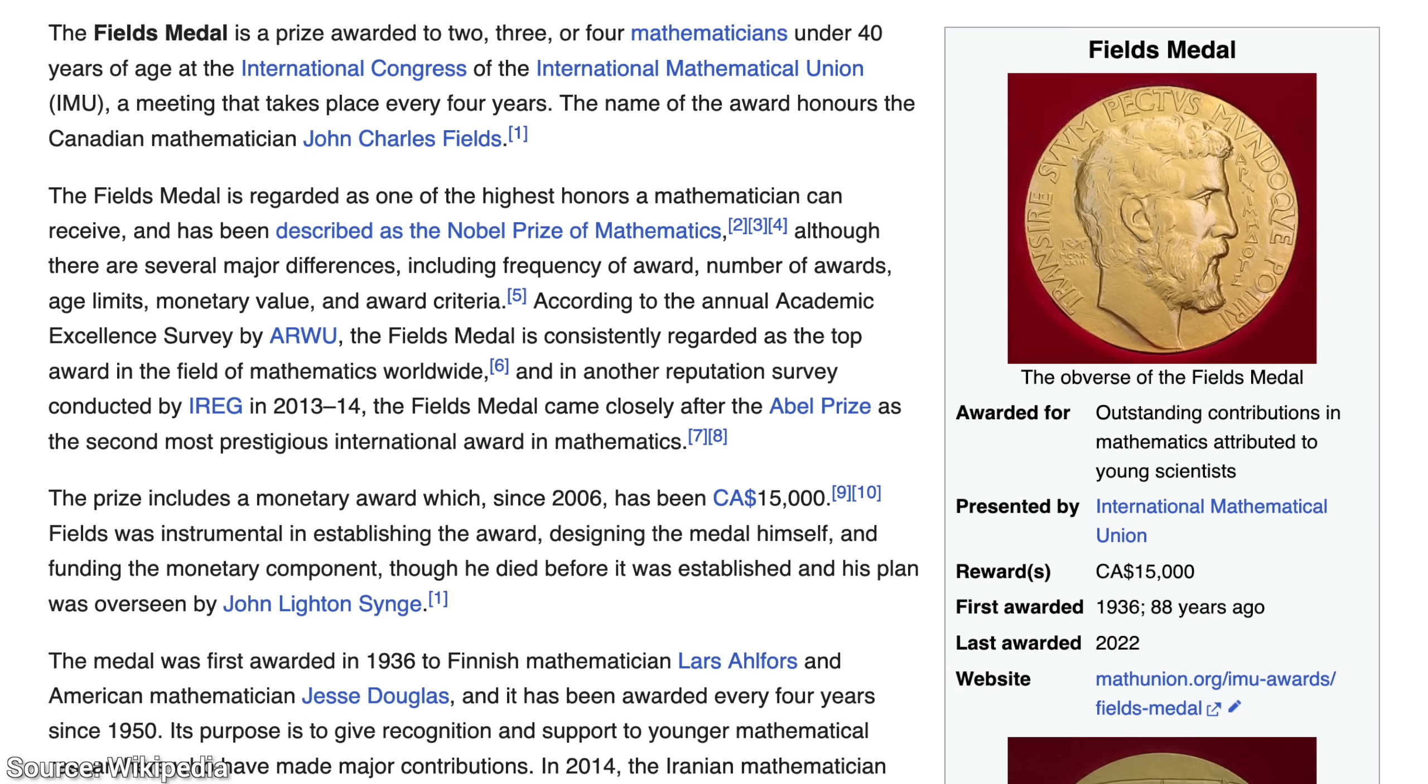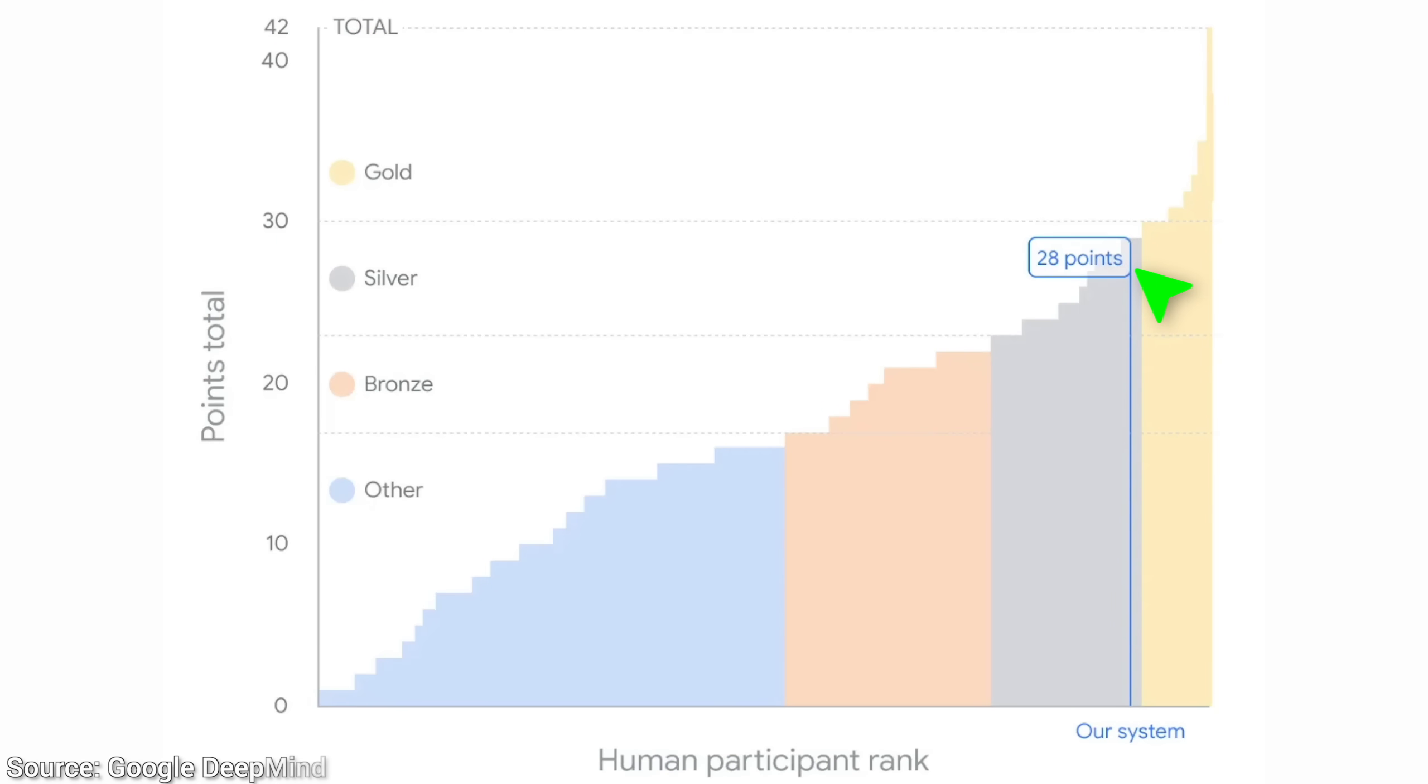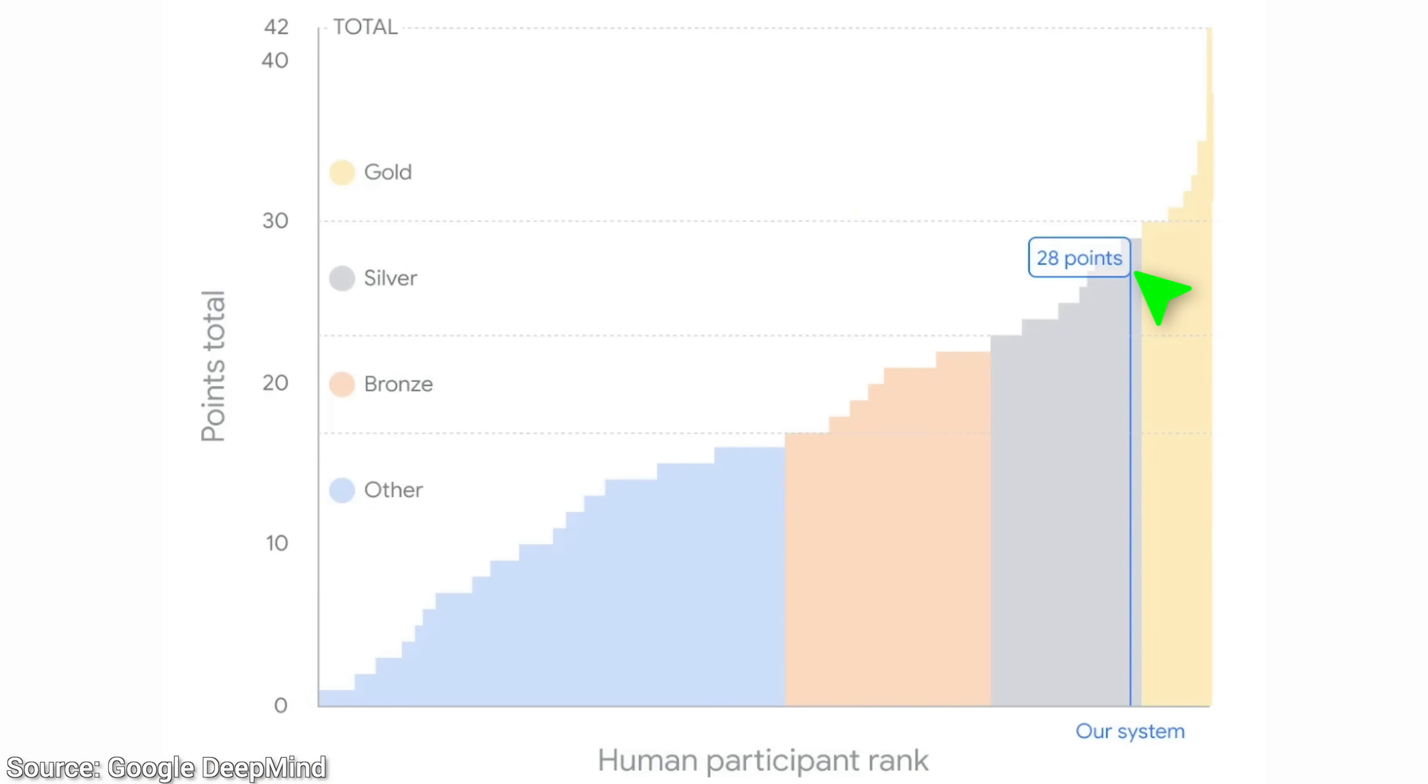So, how good is it? What is the final score? An equivalent of a silver medal. Just one point off of the gold. Among some of the best mathematicians on the planet. Goodness!